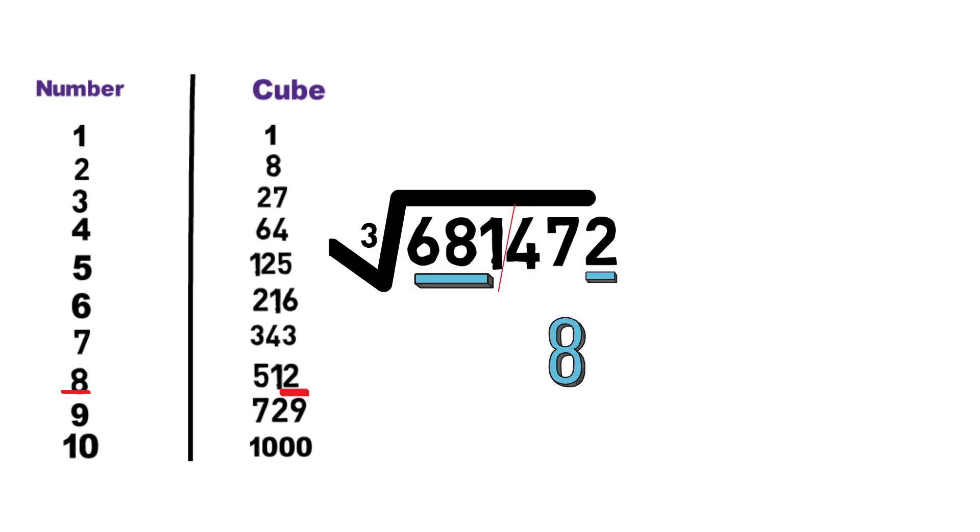Now for the starting digit, we know that 8 cube is 512, 9 cube is 729. 681 lies between 512 and 729.